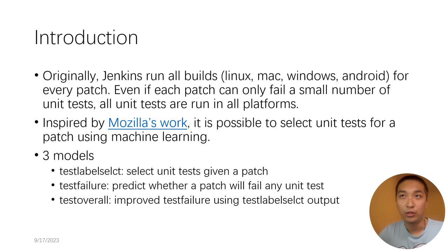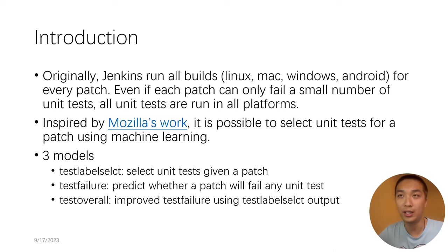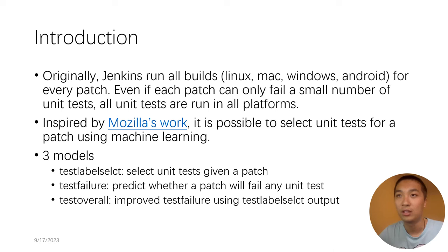Let me first introduce the motivation of this project. Originally, whenever we push a patch to git, a Jenkins job is triggered where builds are run across all platforms, including Linux, Mac, Windows, and Android. We have observed that typically every patch will only change a small part of the code, so only a few unit tests are affected. Therefore, there is no need to run all unit tests for every patch — we can skip those irrelevant or low-risk tests to save computation.